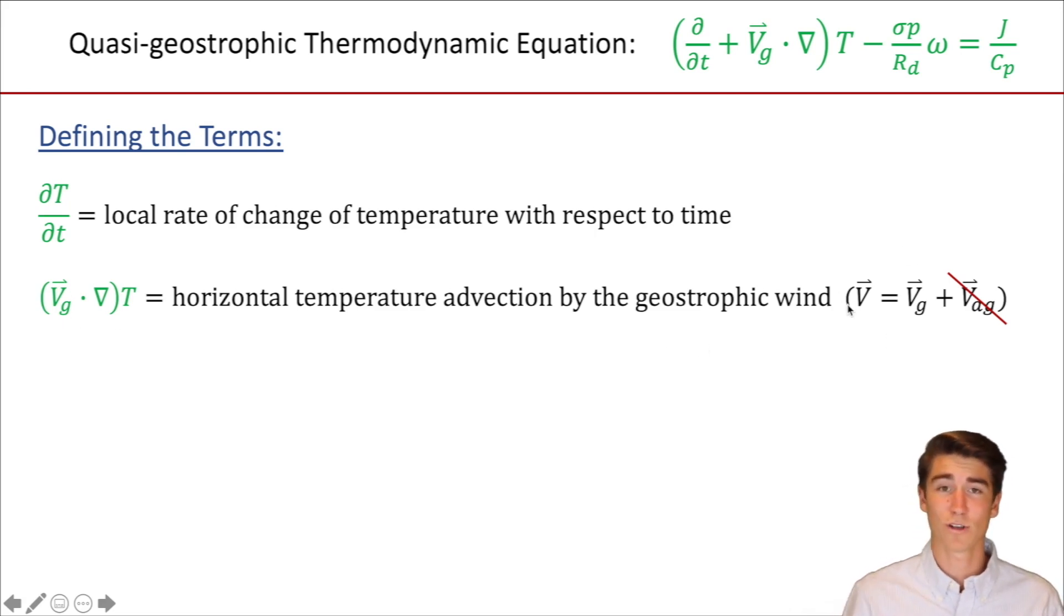So here is where this geostrophic term comes from. V, the horizontal wind, can be separated into its geostrophic component, the one parallel to isobars, and the ageostrophic component, the one not parallel to isobars. As it turns out, and is true for all these quasi-geostrophic equations, the ageostrophic term makes the math really hard.